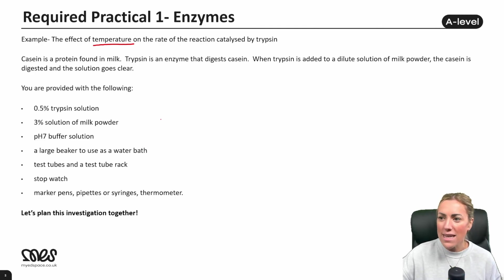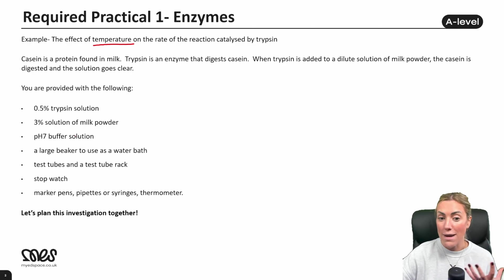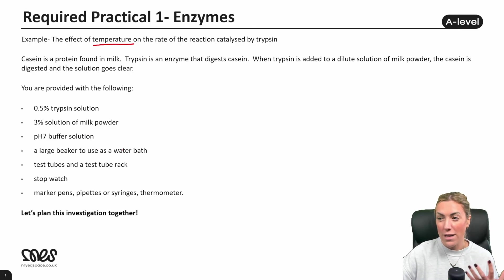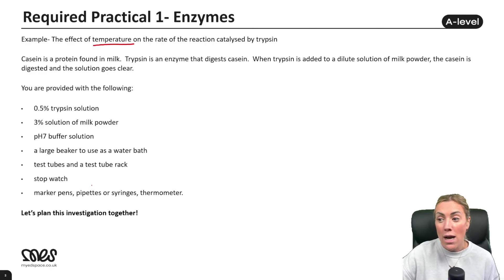Here's our equipment list: a 0.5% trypsin enzyme solution, a 3% milk powder solution, a pH buffer to control and maintain the pH, a beaker to use as a water bath — we'll probably need multiple water baths — test tubes and a test tube rack, a stopwatch for timing, and standard equipment including marker pens, pipettes or syringes to measure volumes, and a thermometer.